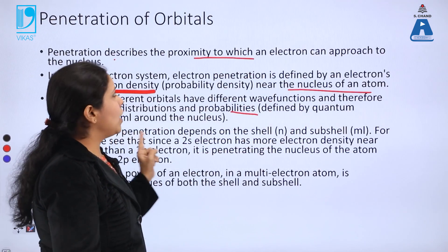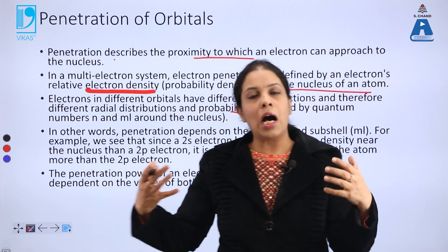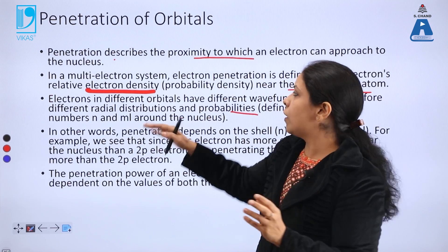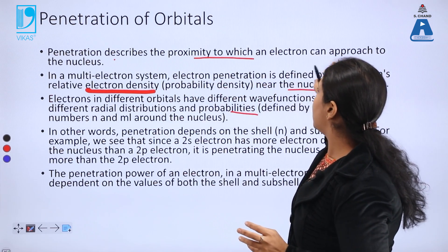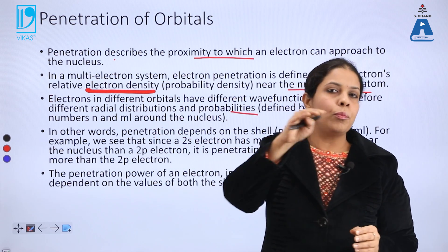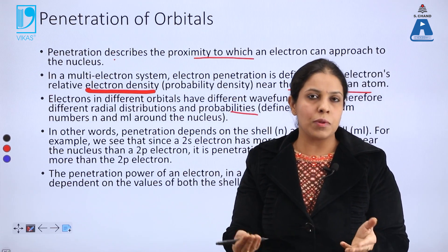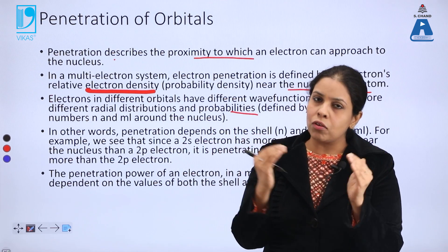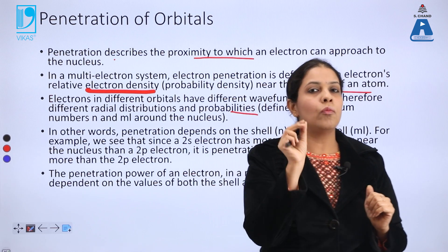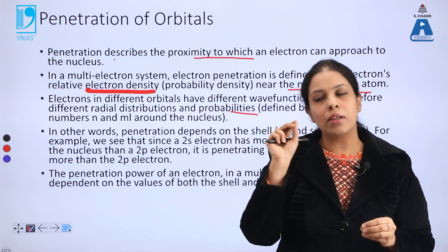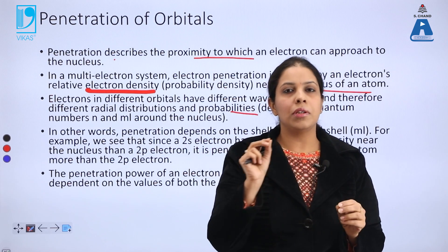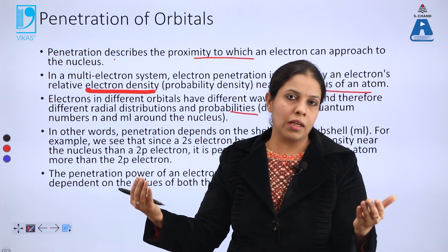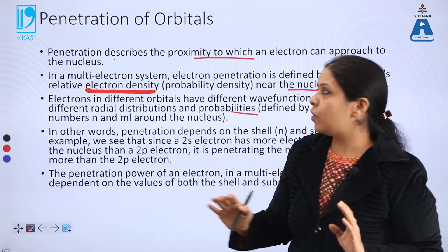The next topic is penetration of orbitals. Penetration describes how close an electron can approach the nucleus. The nucleus is positively charged and electrons are negatively charged, so they attract each other. However, whether an electron comes into an s, p, d, or f orbital — depending on the radius of those orbitals and which shell it occupies — defines what the penetration of those orbitals will be.